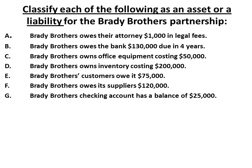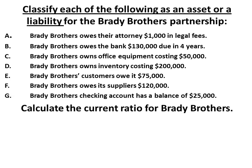Moving on, let's talk about the current ratio. Before we can go to the current ratio, we need to understand the differences between assets and liabilities. Let's take a look at these seven examples here. Brady Brothers owes their attorney $1,000 in legal fees — that's a liability. Brady Brothers owes the bank $130,000 due in four years — that's a liability. Brady Brothers owns office equipment costing $50,000 — that's an asset. Brady Brothers owns inventory costing $200,000 — that's an asset. Brady Brothers' customers owe it $75,000 — that's an asset called accounts receivable. Brady Brothers owes its suppliers — that's a liability, accounts payable. Brady Brothers' checking account has a balance of $25,000 — that is an asset.